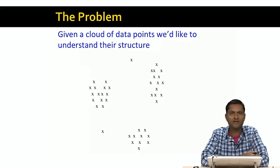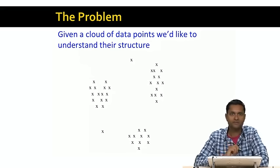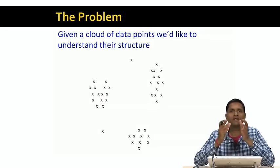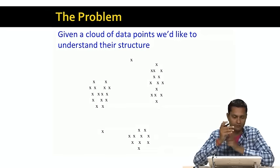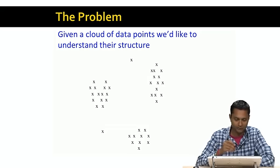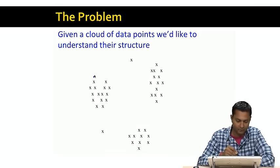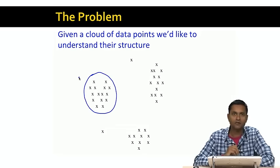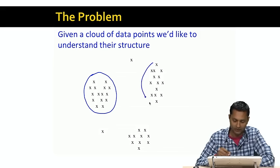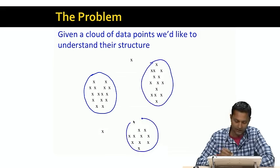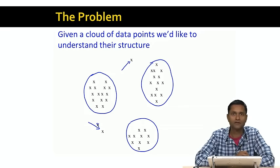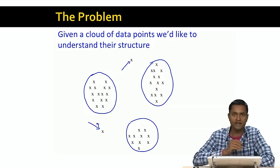The basic problem of clustering is quite simple. We have a cloud of data points — here you see data points in two dimensions — and we'd like to get some understanding of the structure of the data points, beyond just seeing them in the two dimensions. For example, it's intuitively clear by looking at these points that there are three groups of points here. And it looks like we have two outliers that don't fall into any of the groups. The goal of clustering is to find groups like this, except in much higher dimensional spaces than two dimensions.